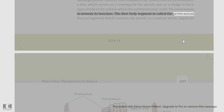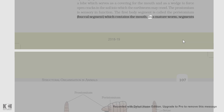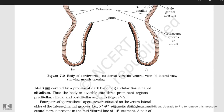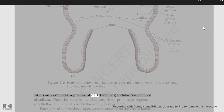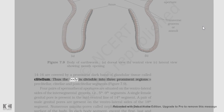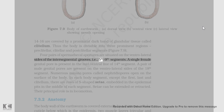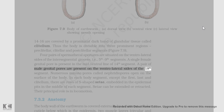The first body segment is called the peristomium (buccal segment), which contains the mouth. In a mature worm, segments 14 to 16 are covered by a prominent dark band of glandular tissue called the clitellum. Thus the body is divisible into three regions: preclitellar, clitellar, and postclitellar segments. Four pairs of spermathecal apertures are situated on the ventrolateral sides of the intersegmental grooves of the 5th to 9th segments. A single female genital pore is present in the mid-ventral line of the 14th segment. A pair of male genital pores are present on the ventrolateral sides of the 18th segment. Numerous minute pores called nephridiopores open on the surface of the body.